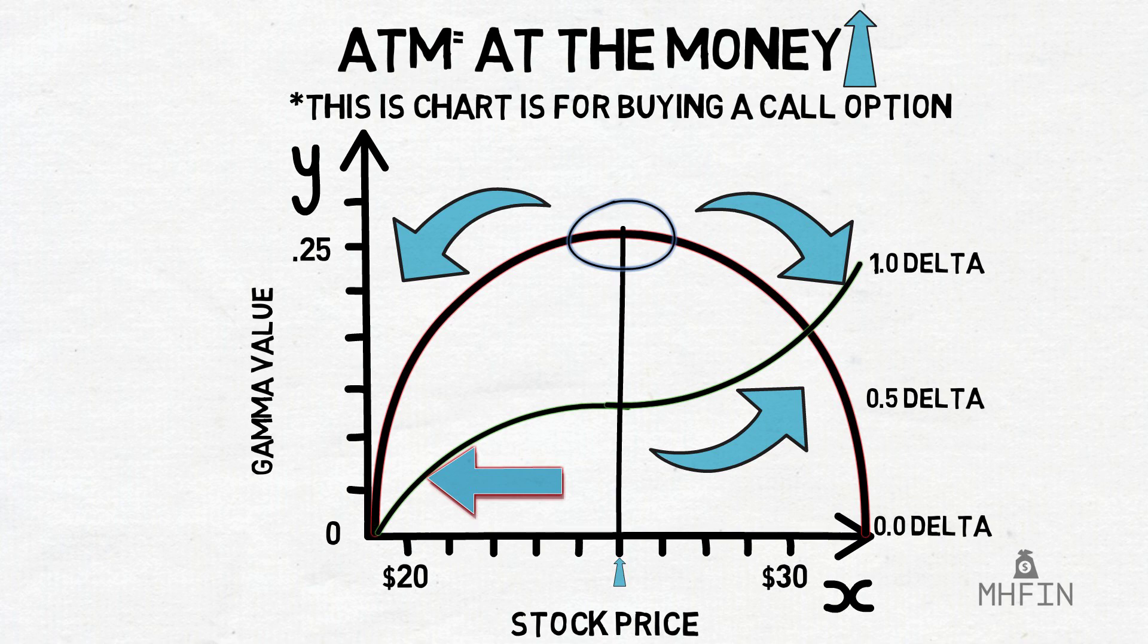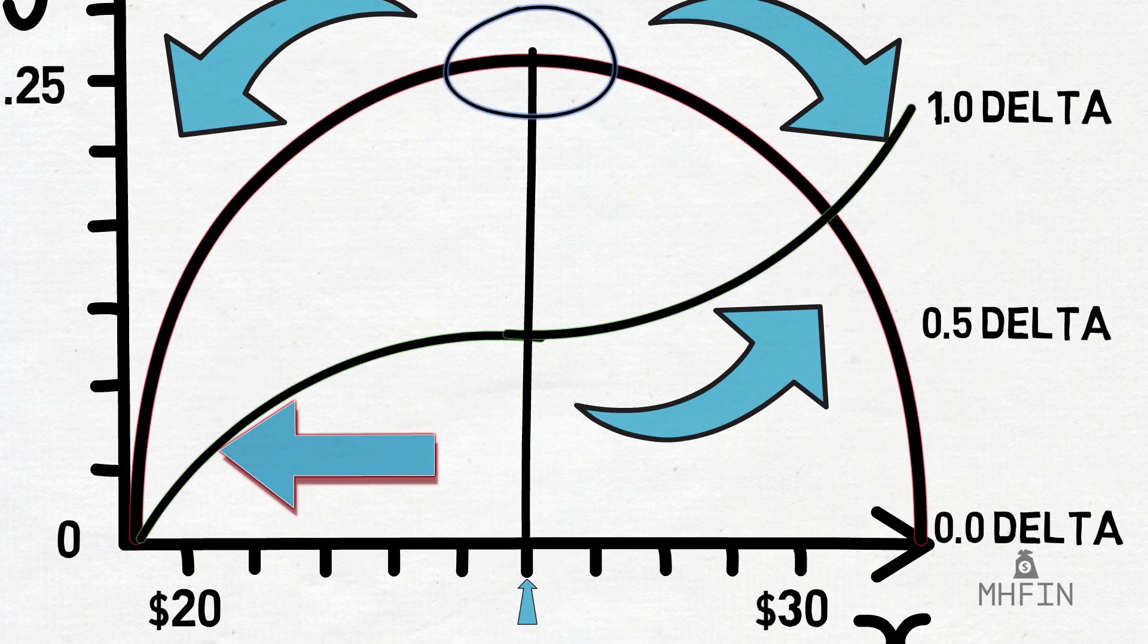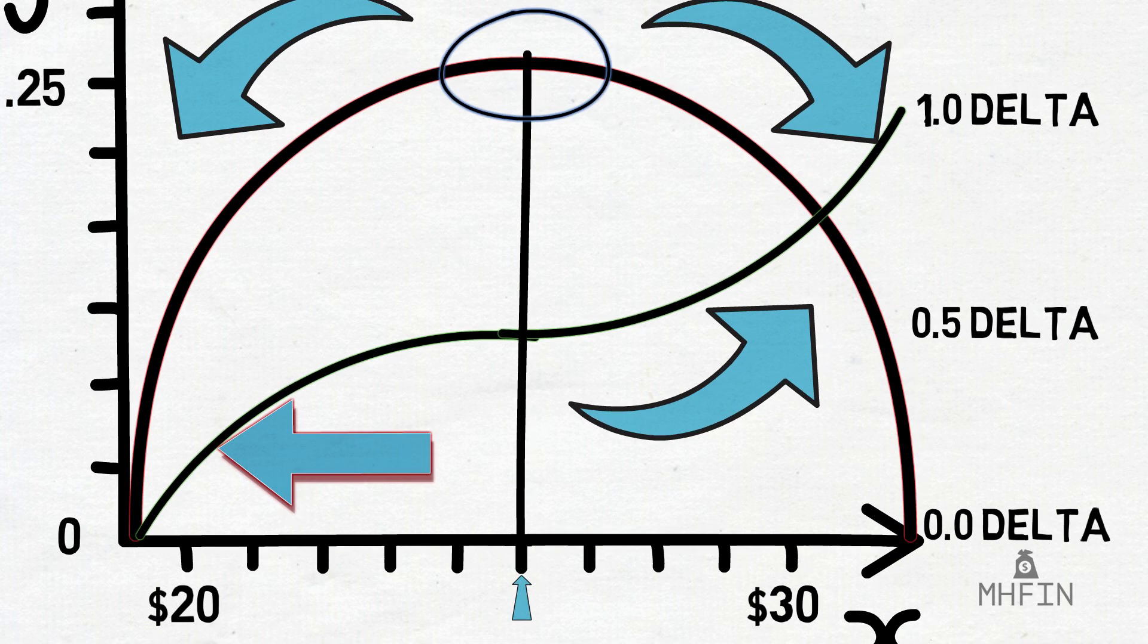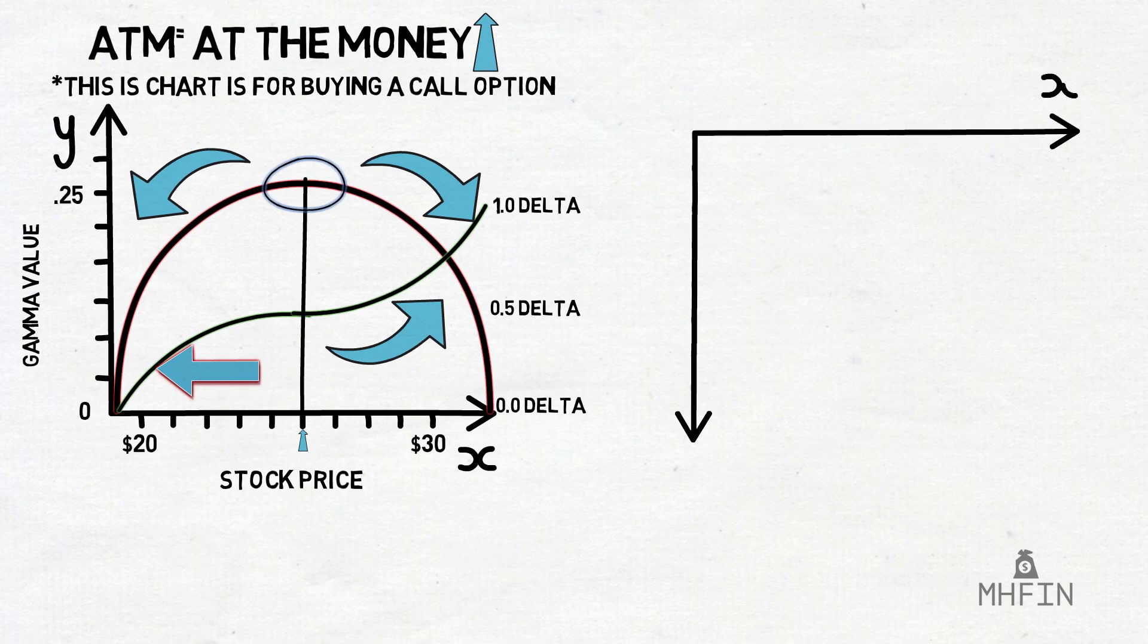The relationship that exists between the two is further explained later in the video. But it is very important to note that gamma is typically at its highest when the price of the option is exactly at the money, and that gamma decreases approaching zero as the call option gets deeper in the money or out of the money, or as delta approaches 0 and delta approaches 1, whichever way you want to say it.